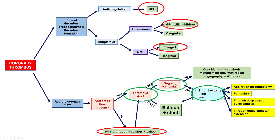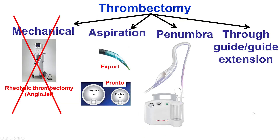Next we assess the thrombus size. If there is a small thrombus, we typically go to balloon and stent. If there is a large thrombus, it depends on whether there is ongoing ischemia. Our patient clearly had ongoing chest pain and ischemia, so reducing the thrombus burden can help optimize PCI results. This can be done with aspiration thrombectomy, the Penumbra system, or by deep-seating the guide or aspirating through a guide extension. Rheolytic thrombectomy is almost never done these days.